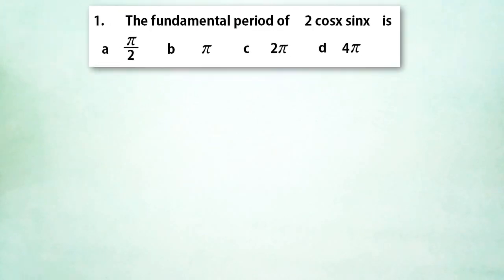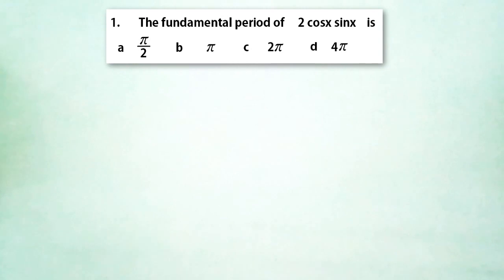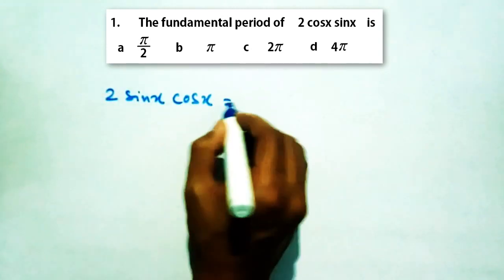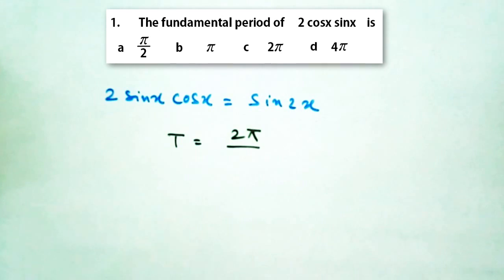In this case, the fundamental period of 2 cos x sin x is asked. Here we can write 2 sin x cos x as sin 2x, and so the period of sin 2x will be 2π divided by the coefficient of x, in this case it is 2. So option b is the correct option.